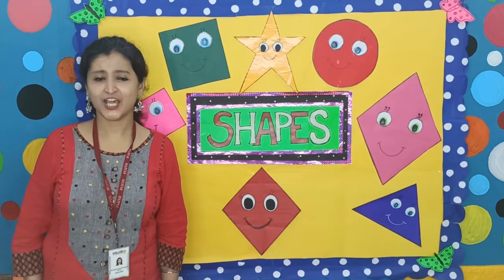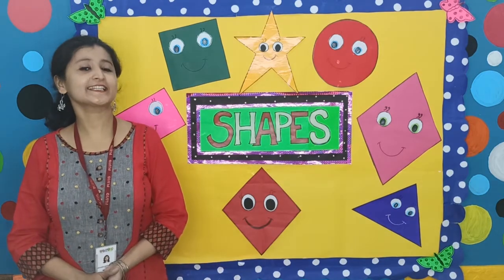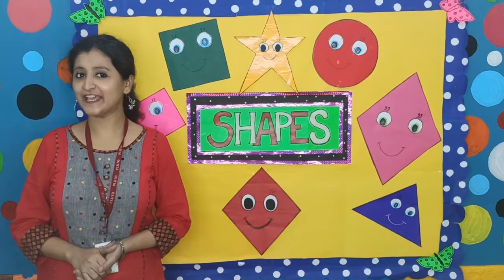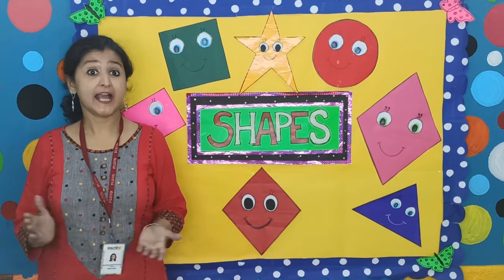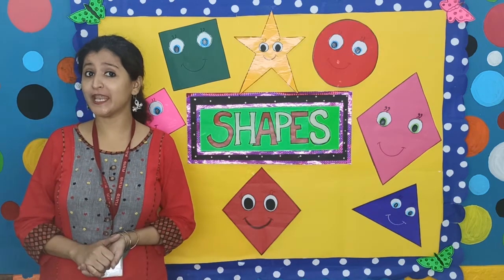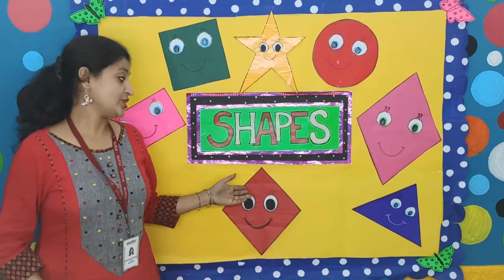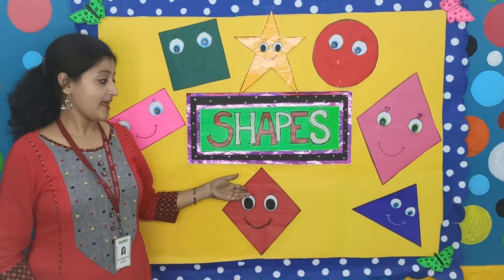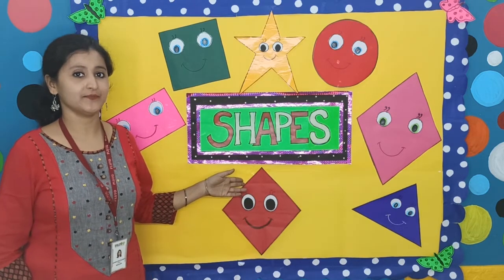Hi, kids. Do you like flying kites in the sky? I like flying kites in the sky. And a kite has a shape. Do you want to know the name of the shape? The shape is diamond. And this is our friend, Daisy the Diamond.